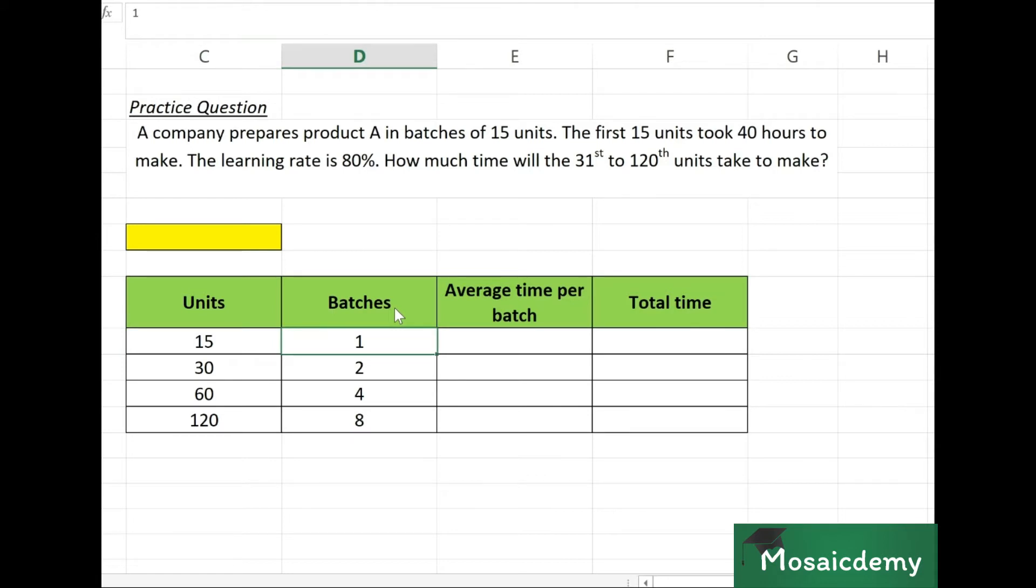So it says the first batch took 40 hours to make, average time and total time. The learning rate is 80%. How much time will the 31st to 120th units take? We have 30 units here, so 31st to 120th basically means the difference between the total time for 30 units and the total time for 120 units.